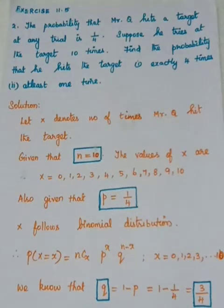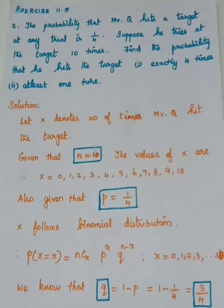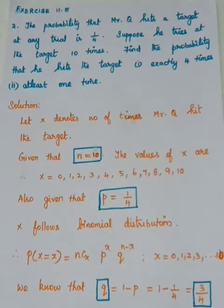Good morning students. Exercise 11.5, second problem. The probability that Mr. Q hits a target at any trial is 1 by 4. Suppose he tries at the target 10 times. Find the probability that he hits the target: first subdivision, exactly 4 times, and the second subdivision, at least 1 time.